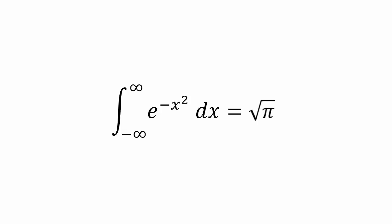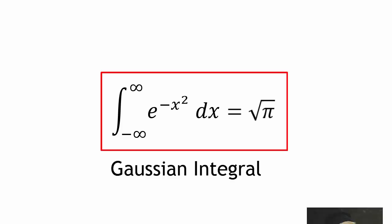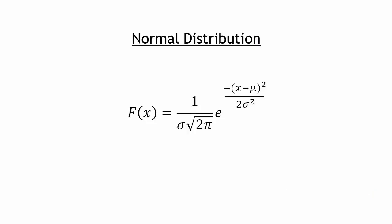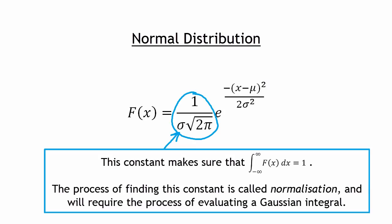The integral we've just solved does have a special name — it's called the Gaussian integral. This Gaussian integral appears quite a lot across mathematics and physics. As we've seen, we encounter it when working with normal distributions, and being able to evaluate it is important when normalizing the equation for the normal distribution. Anyway, that's all I have time for. Thank you very much for watching, and I'll see you again very soon. Goodbye.